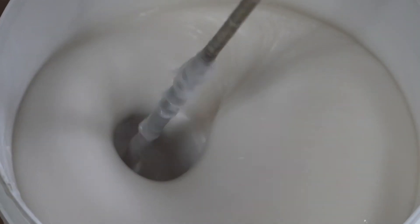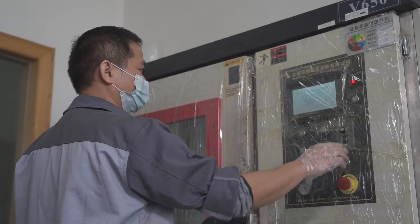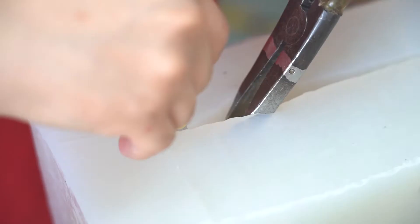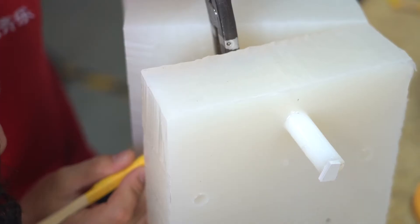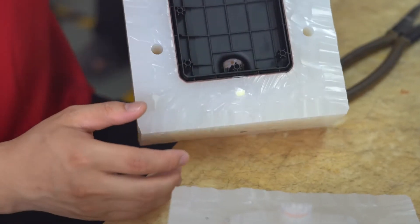The master model is suspended in a box, liquid silicone rubber is poured around it, and the mold is placed in an oven. Once cured, we carefully split the mold, remove the master model, and there you have a core and cavity.